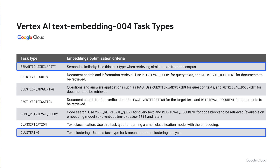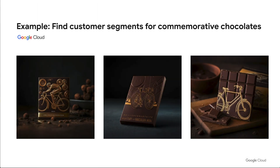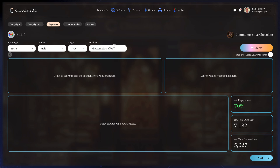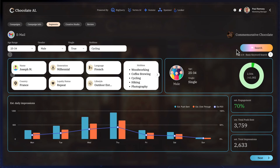Imagine I'm a marketing analyst for Chocolate AI, trying to improve the performance of my marketing campaigns by targeting different customer segments with tailored promotions. For example, the Tour de France is coming up and I want to promote special edition commemorative bike-themed chocolates. In the past, I would cast a wide net and send a promotional email to all subscribed customers. However, every time I send a customer an email they're not interested in, the more likely they'll ignore future communications — or worse, unsubscribe altogether. Using my Gemini-generated segments, I can now search for customers who are interested in cycling to target with a hyper-personalized email campaign.